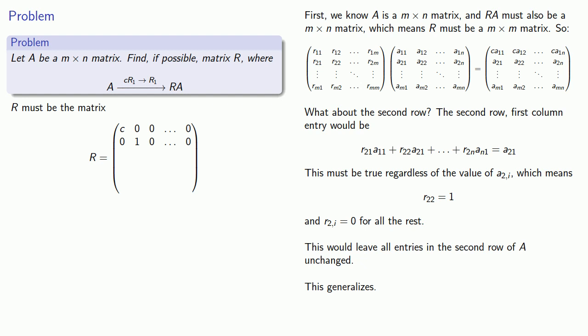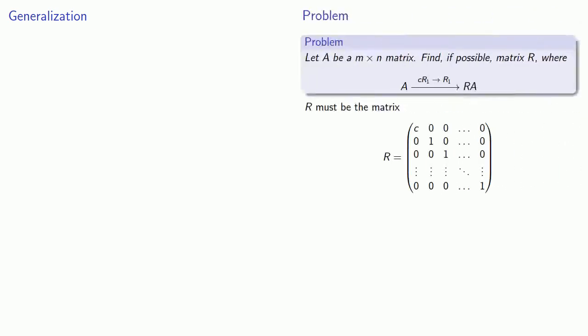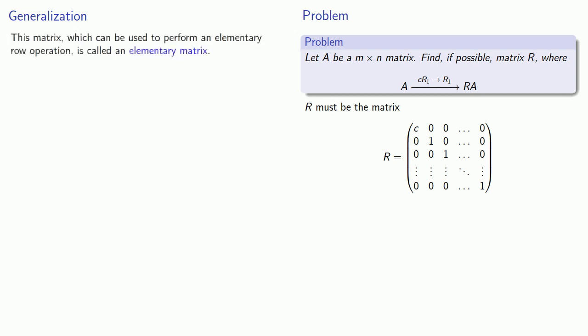This generalizes and allows us to find the remaining rows of matrix R — verify this for yourself. An important habit as a mathematician is to ask how we can generalize a result. First we need a name: a matrix which can be used to perform an elementary row operation is referred to as an elementary matrix.